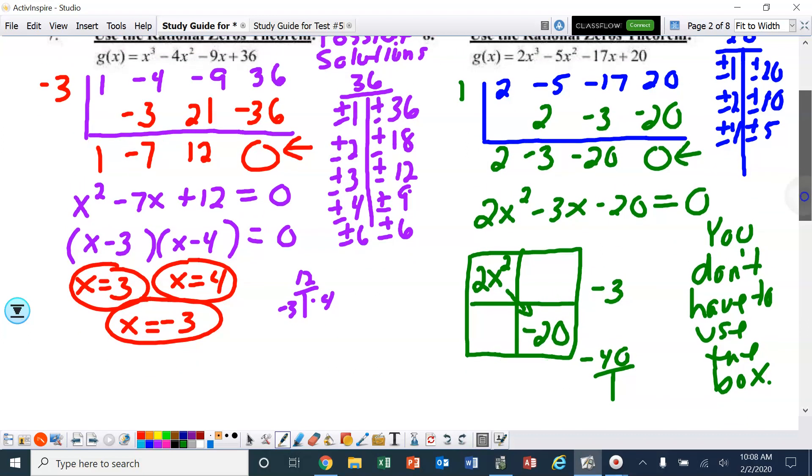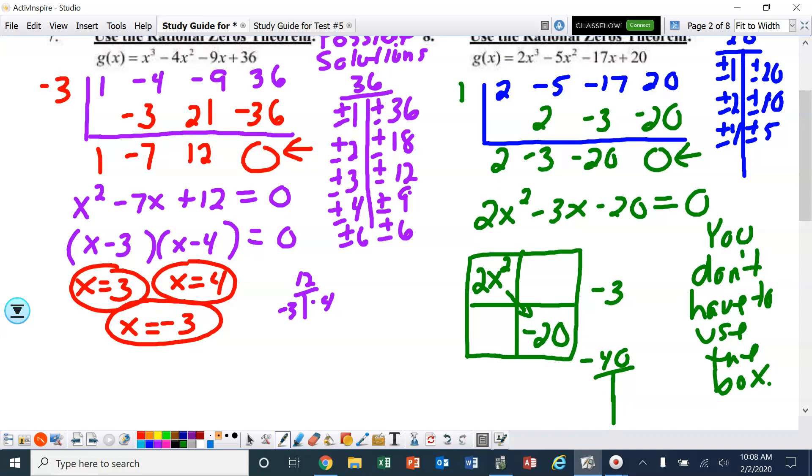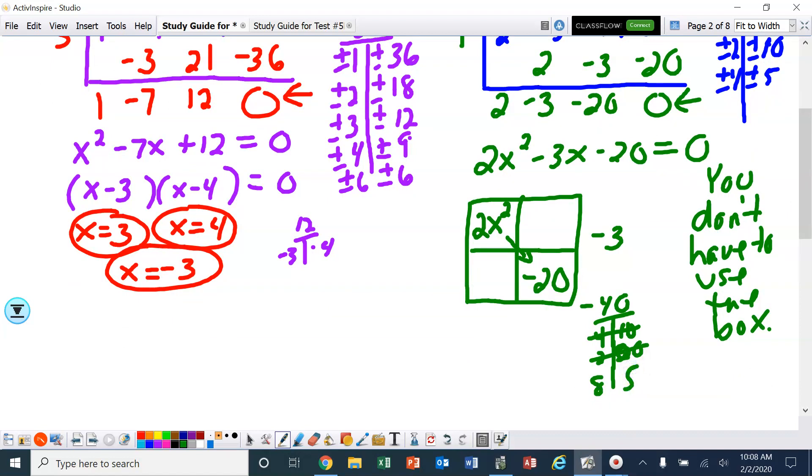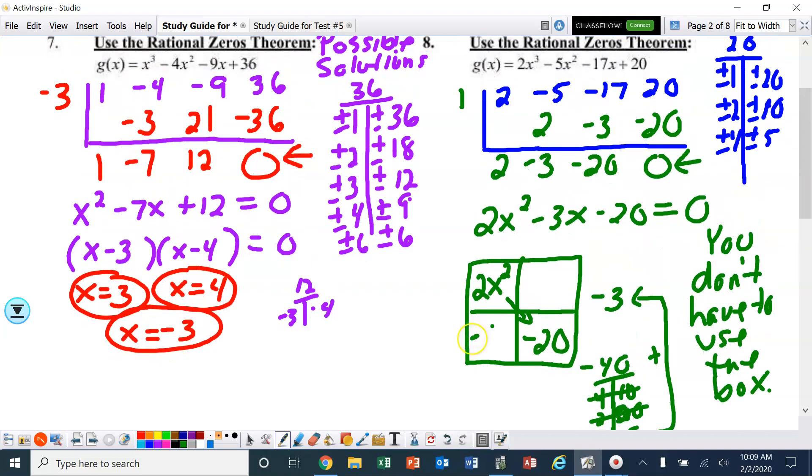The middle term is -3. So I need to find factors of -40 that add up to -3. I know 4 and 10, but that's not going to work. 2 and 20 is not going to work. 8 and 5. I think 8 and 5. So it looks like I need it to be -8 and positive 5. That will add up to -3. So I'm going to put a -8x here and a 5x here.